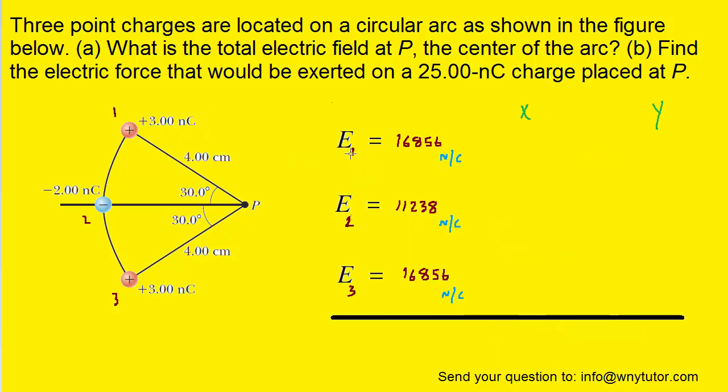So what we'd like to do is consider the x and y components of E1. Now charge 1 is a positive charge, and we recall that positive charges produce electric fields that point away from the positive charge. So for example, at point P, instead of pointing a line towards the positive charge, we actually have to point it away from that positive charge. So we have to label an electric field E1 pointing in this direction here. So that's the direction of E1.